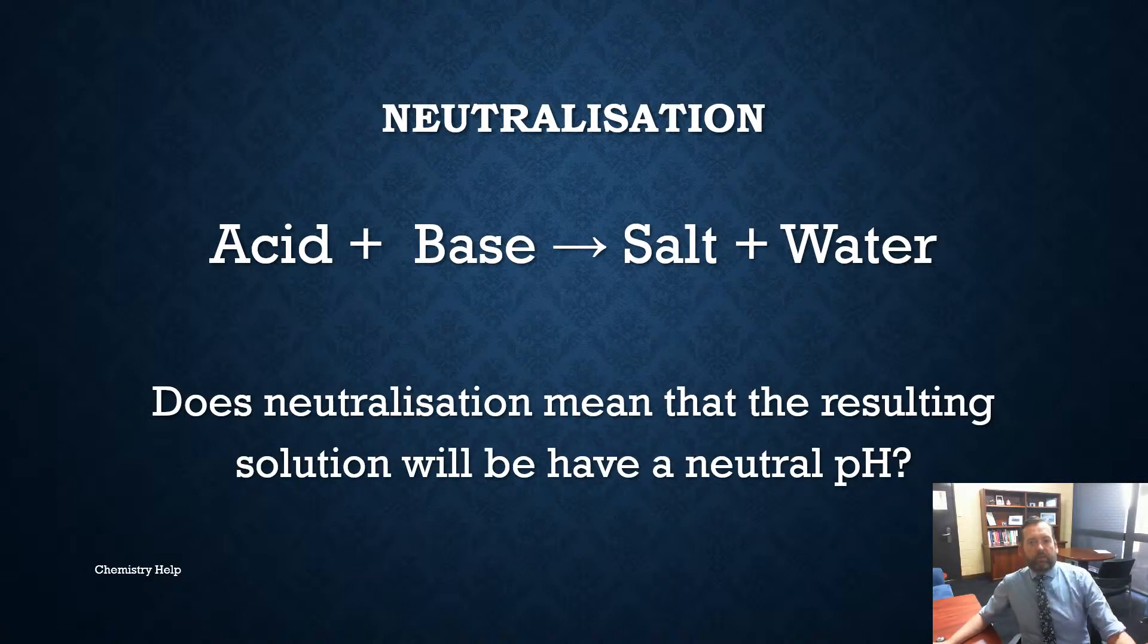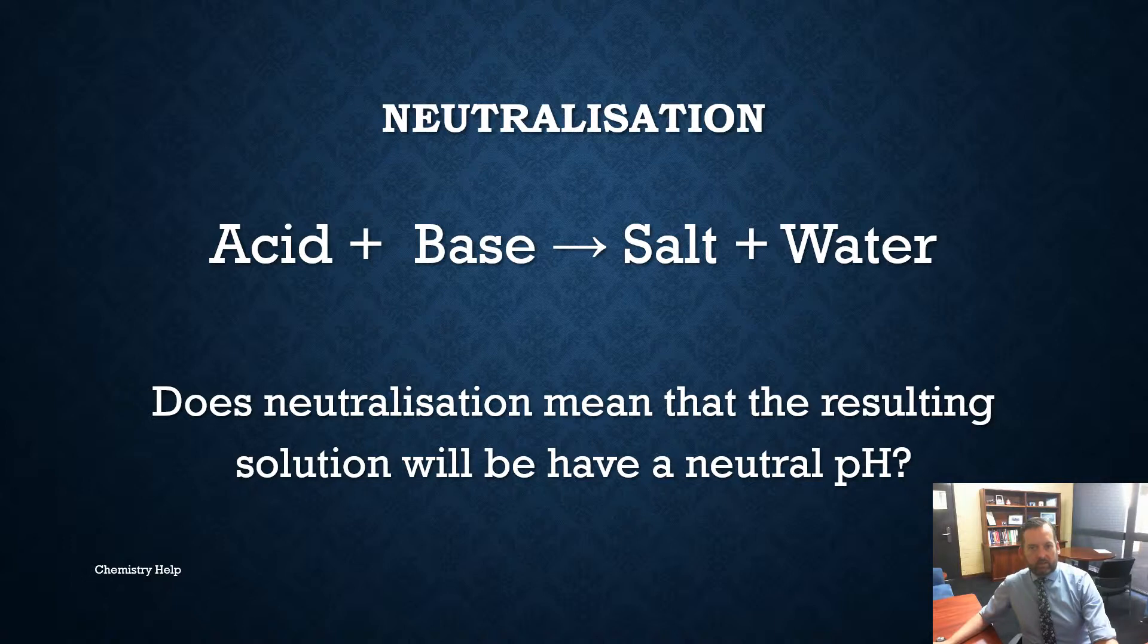So does neutralization mean that the resulting solution will have a neutral pH? This is really important when we come to look at titrations because a titration is a neutralization reaction. We're adding an acid to a base, we're picking an endpoint with an indicator when the correct stoichiometric ratio of acid is added to base to completely neutralize both. What will the pH be? Now theoretically you'd say well of course I've neutralized the acid with the base, it's going to be pH 7.